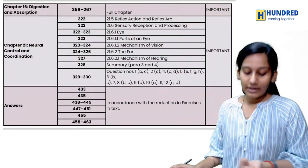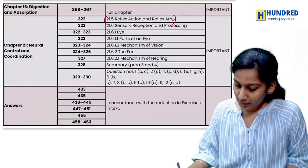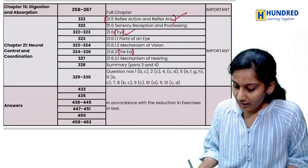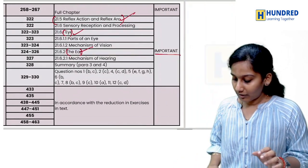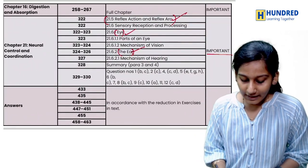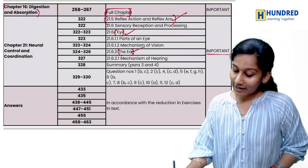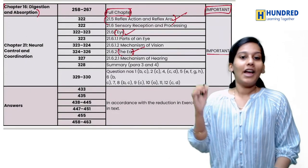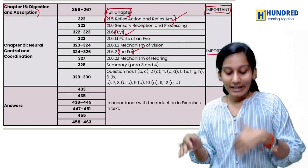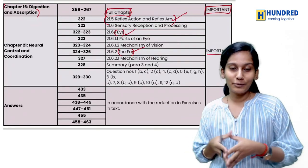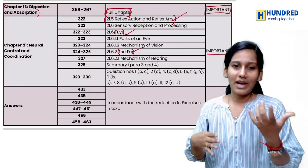Neural Control and Coordination — everything is important. Reflex action and reflexes are very important, and even the eyes and ears topics are very important. The whole chapter has important topics, so make sure you read it. Digestion and Absorption is also a main topic — the full chapter is actually an important chapter. I don't know why they removed it because even in MBBS first year, human physiology deals with digestion and absorption. Don't skip it — understand how digestion, absorption, and assimilation happen.